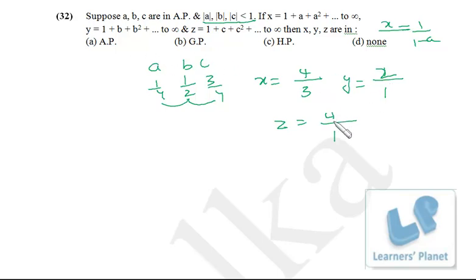So 4 by 3, 2 and 4. Obviously doesn't look in AP, doesn't look in GP. Let's check for HP. If x, y, z are in HP then y must be 2xz upon x plus z.